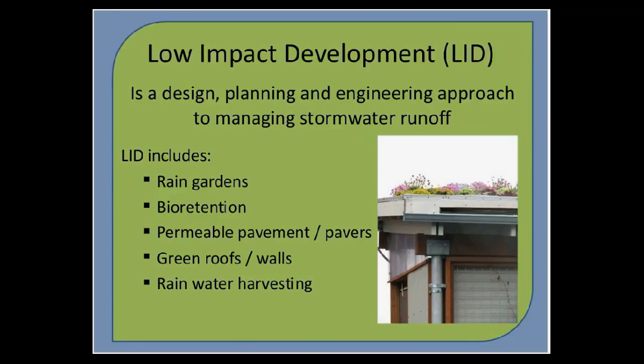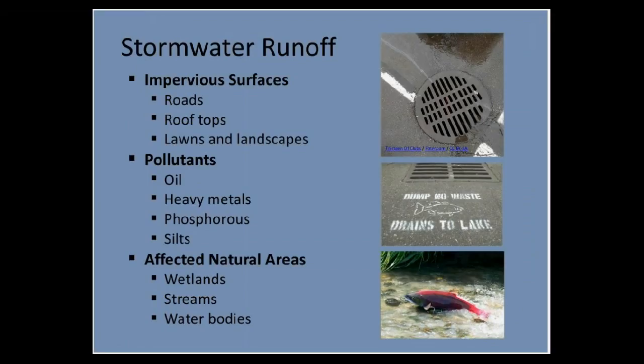Roofs or walls layered with waterproofing materials, growing medium and vegetation designed to help filter water. And rainwater harvesting systems, which use barrels or cisterns to capture rainwater for uses like irrigation or flushing toilets.